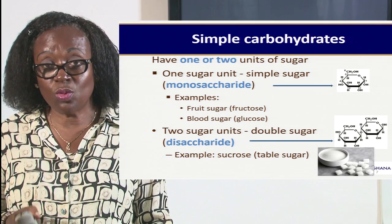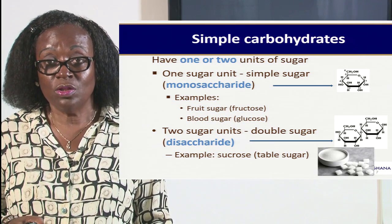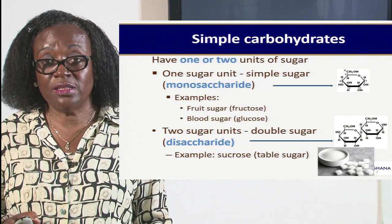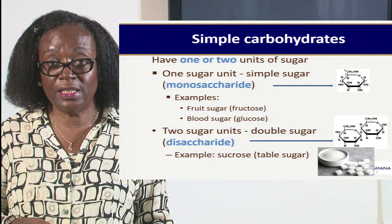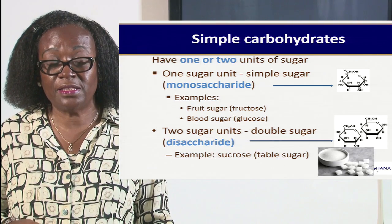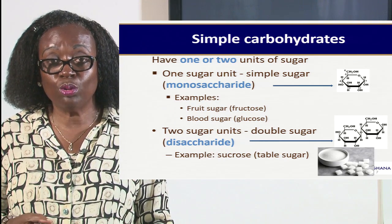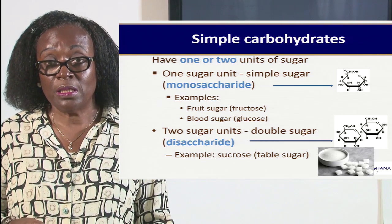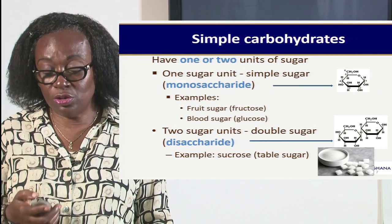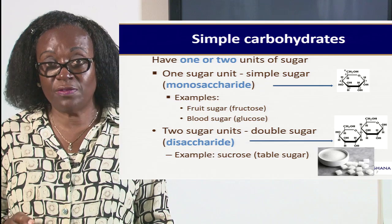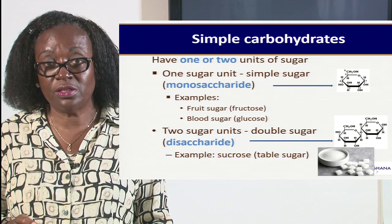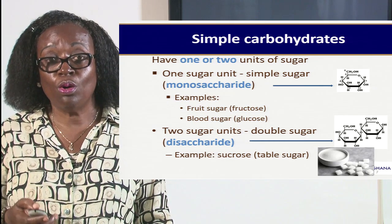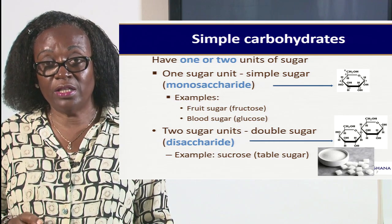That is why normally you see that athletes when they run and they get to the end line and they are tired, they are given glucose solution — because you don't need to digest it. But for disaccharide, you need to break the bond into two to get a simple sugar.